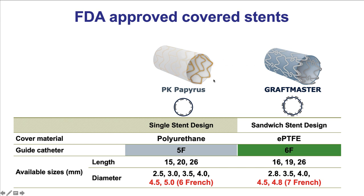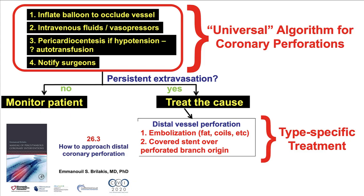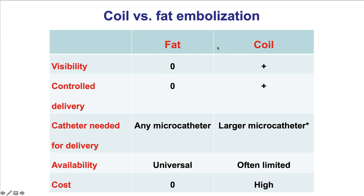Those stents should be available in all cardiac cath labs performing PCI. If the patient has distal vessel perforation, then usually the therapy is embolization with fat or coils. Sometimes one can place a covered stent over the origin of the perforated branch if it is too small. This will be discussed in video 26.3. Fat and coil have advantages and disadvantages. Coils are visible and can be placed more accurately with position confirmed before deployment. Fat is universally available and has zero cost, but it is harder to visualize and multiple pieces might be needed to achieve hemostasis.